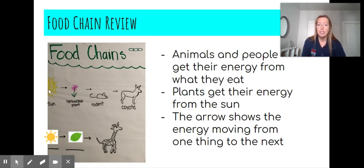In our first example, it starts with the sun and the sun is giving its energy to a plant. A plant is giving its energy to a rodent when the rodent is eating the plant. And then the rodent gives its energy to the coyote when the coyote eats it.